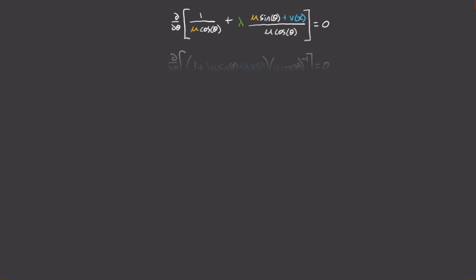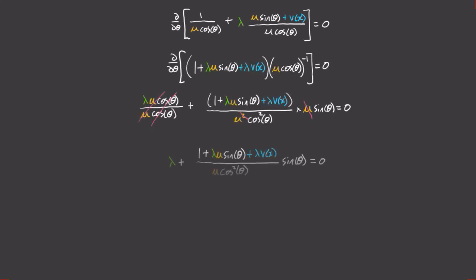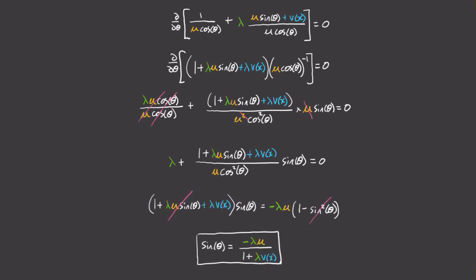I'll zoom through the math for you, but del-L del-theta is found by applying the chain rule and simplifying. The end result is that sin theta is equal to minus lambda u divided by 1 plus lambda v. It may not hit you at first, but this is the equation of the path that minimizes time. You may have been hoping for an expression like y equals some function of x, but this is just as good because it defines the angle you should swim at at every point. The only thing we have left to do is find the value of lambda.